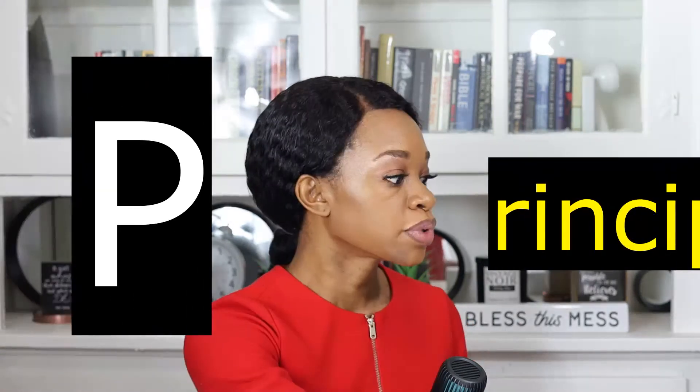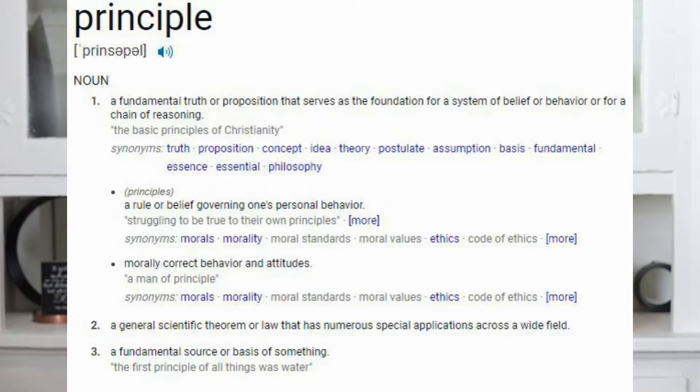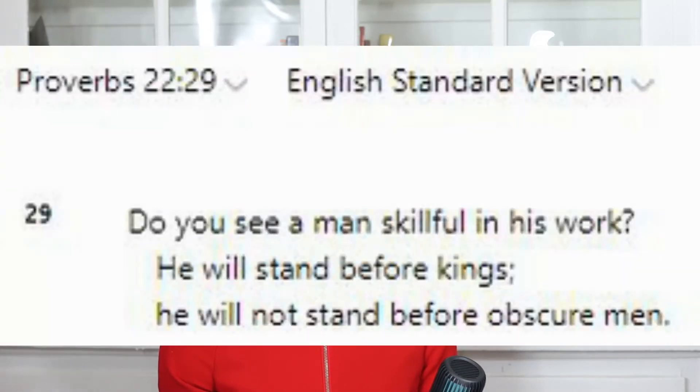Our next P is for principle. Principle is a fundamental truth or proposition that serves as a foundation for a system of belief or behavior, or a chain of reasoning. It is a rule governing one's personal behavior — morally correct behavior and attitudes. You can find a lot of principles in the book of Proverbs. One is Proverbs 22:29: "Do you see a man skillful in his work? He will stand before kings; he would not stand before obscure men." This is not commanding you to be skillful — it's teaching you a principle about how the world works.